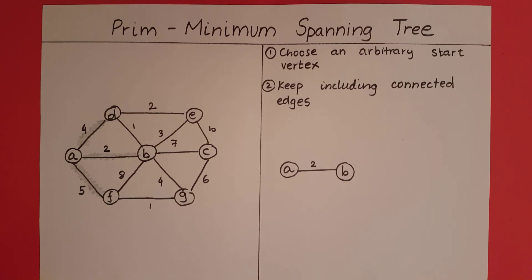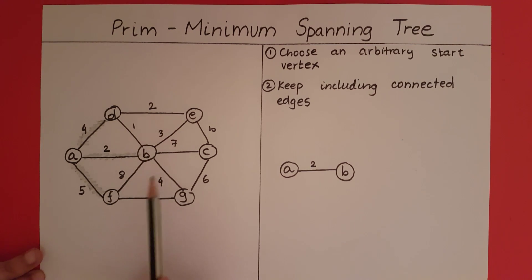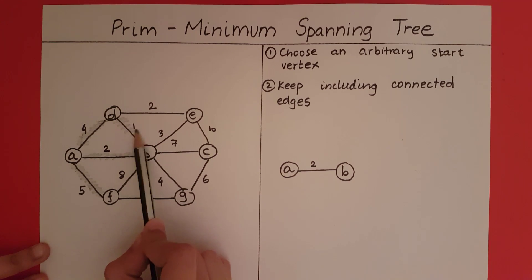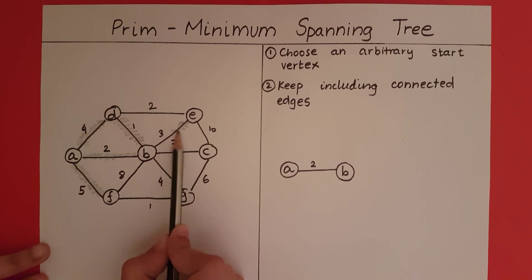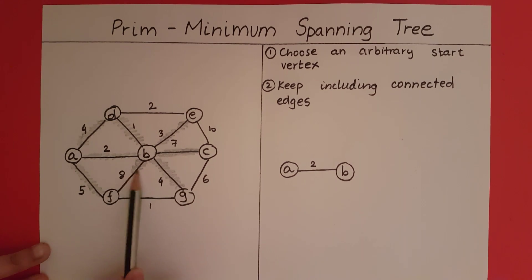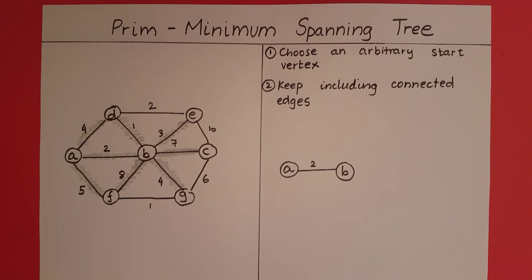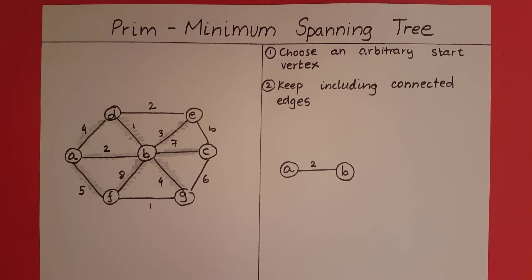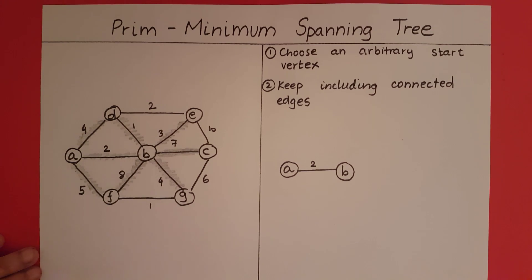Now that we have included B in our graph, let's look at the connected edges to B. We want to include the shaded edge of minimum distance, so we include this edge which has a distance of 1.